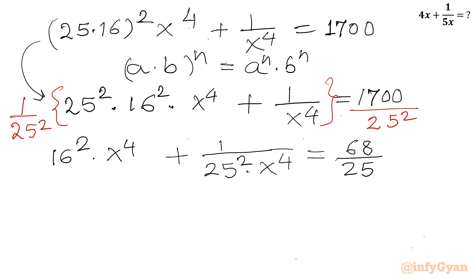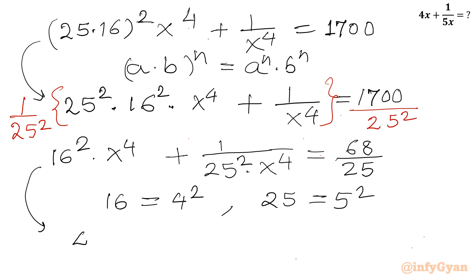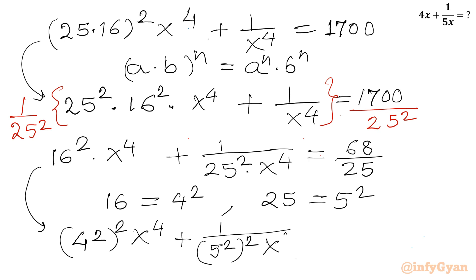Now I can write 16 as 4² and 25 as 5². So I will write (4²)² times x⁴ plus 1 over (5²)² times x⁴ equals 68 over 25.